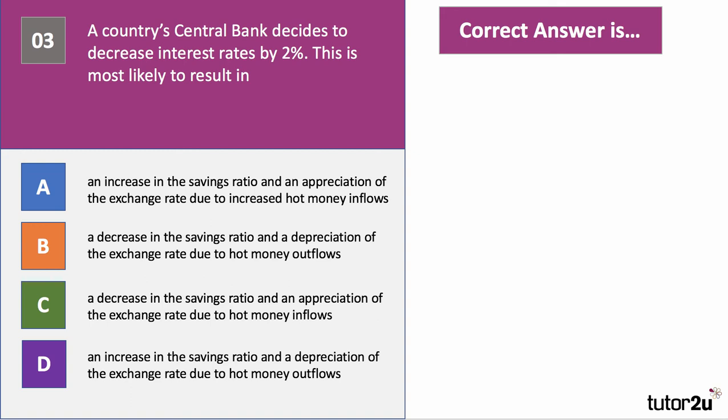The correct answer to question three is B. We'd expect the savings ratio to go down because the real return on savings has fallen, so the propensity to save would reduce. We'd also expect a fall or depreciation in the currency, because if interest rates go down, hot money flows out of the country to another economy where the relative interest rate is higher. So the answer is B.